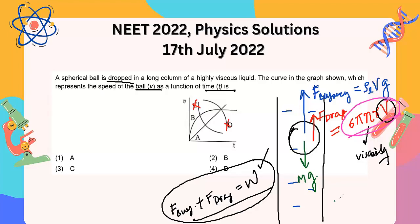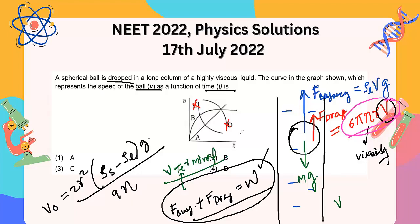So it will attain v_terminal, the fixed constant velocity we call v_terminal. And we have the expression for terminal velocity also. We have the terminal velocity given by 2r² times (ρ of the solid ball, that means the density of the material of the ball, minus the density of the liquid) times g upon 9 times η. η is the viscosity of the liquid.